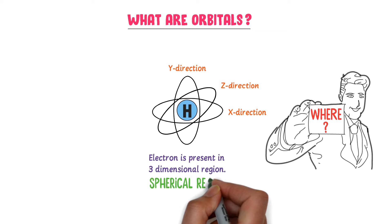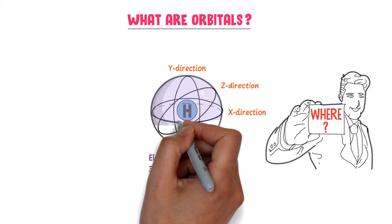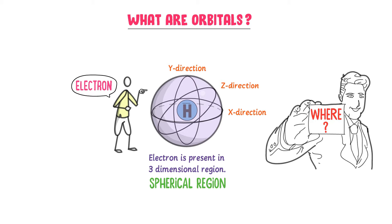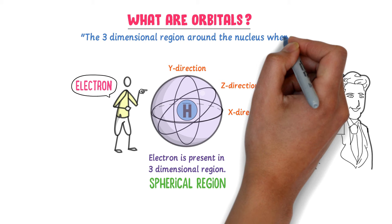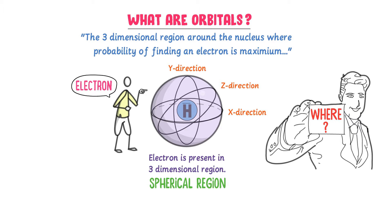Now listen carefully. This three-dimensional space around the nucleus of the hydrogen atom where we can spot the electron is called an orbital. We define an orbital as the three-dimensional region around the nucleus where the probability of finding an electron is maximum.